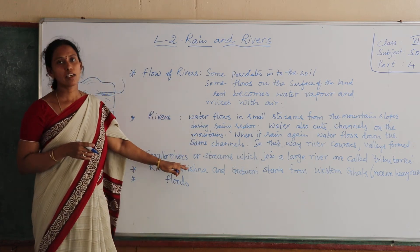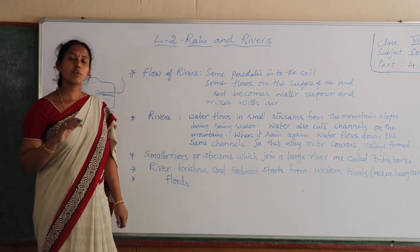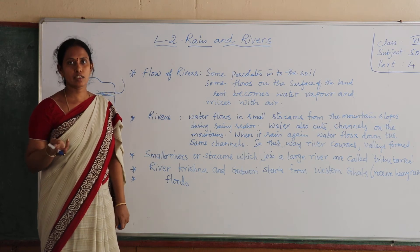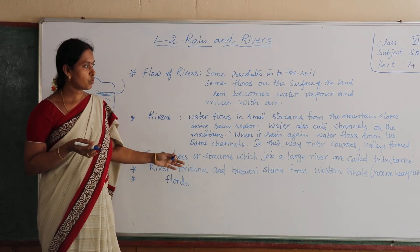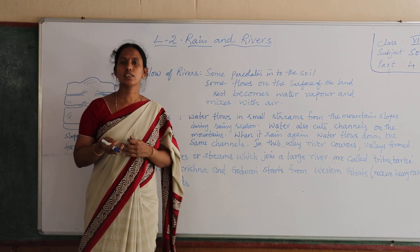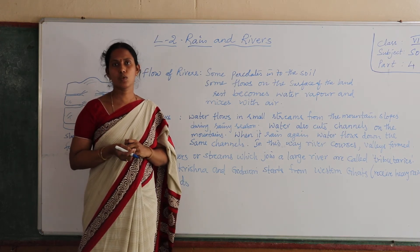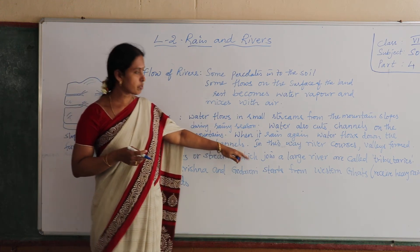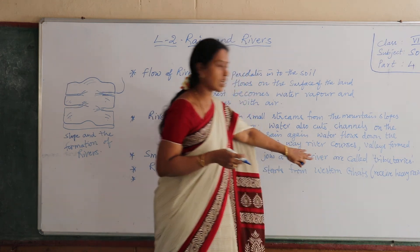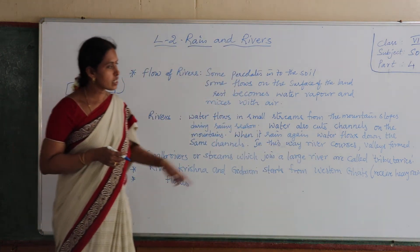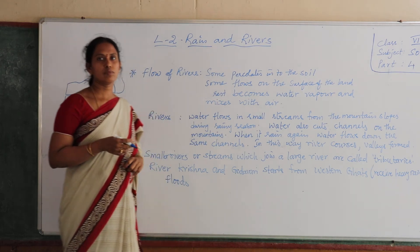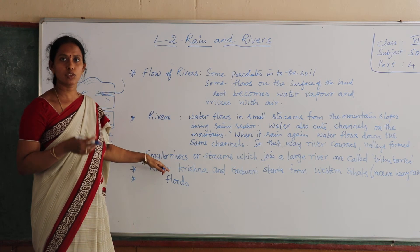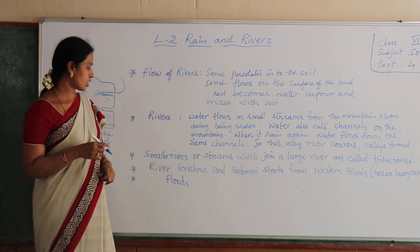Krishna and Godavari rivers have water throughout the year because they are coming from the Western parts. The Western parts receive heavy rainfall, that is why we have more water throughout the year in rivers Krishna and Godavari.